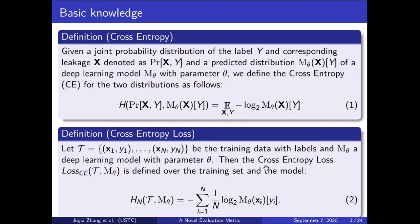First, I give some basic definitions useful for this work. We define cross entropy between the true distribution and the predicted distribution given by the model as follows. Here, x denotes the leakage and y denotes the labels. When we use cross entropy loss, we are using the estimation of cross entropy on a training set. Let t be the training data with labels and m_theta the model. The cross entropy loss is defined over the training set and the model. Since cross entropy loss is an estimation of cross entropy on a sampling set, by the law of large numbers, cross entropy loss converges to cross entropy in probability.